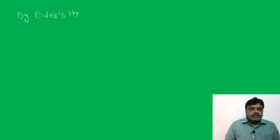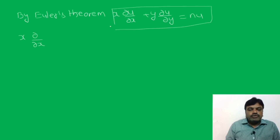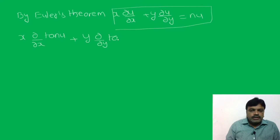By Euler's theorem, what is the theorem, friends? x·∂u/∂x + y·∂u/∂y = n·u. Here the homogeneous function is tan u, so we write x·∂(tan u)/∂x + y·∂(tan u)/∂y = n·tan u.